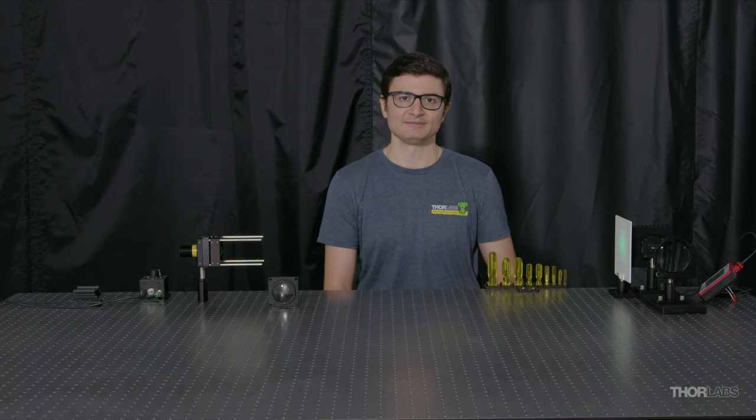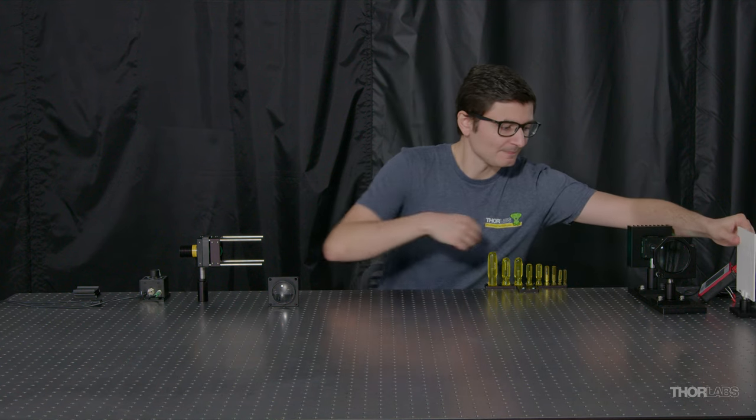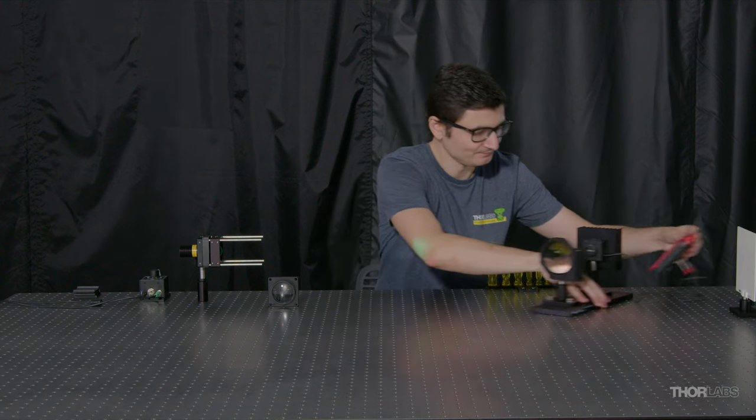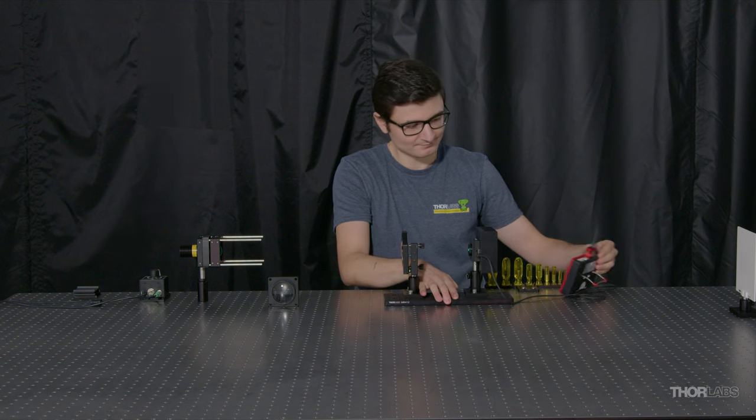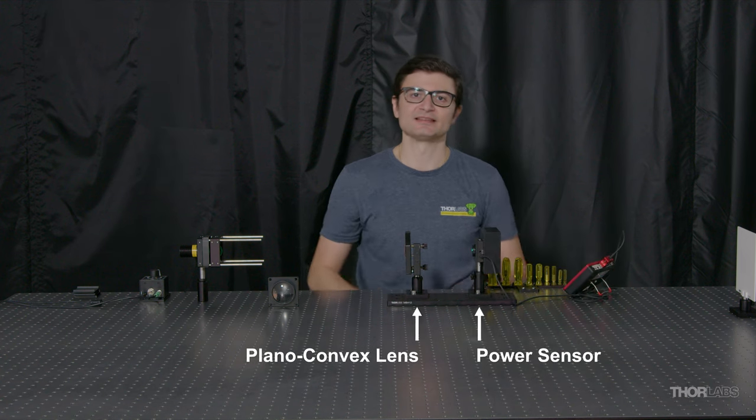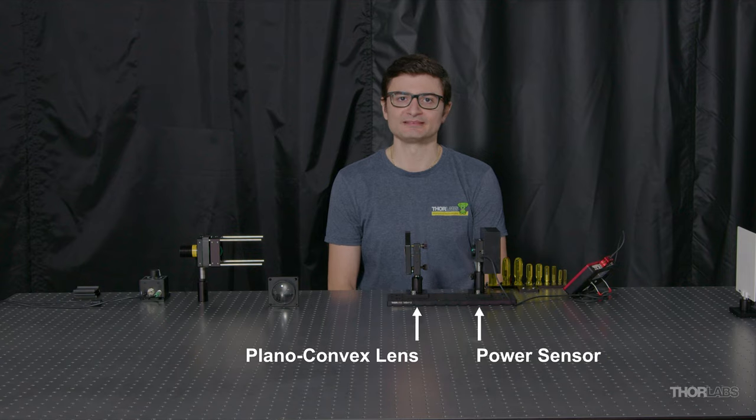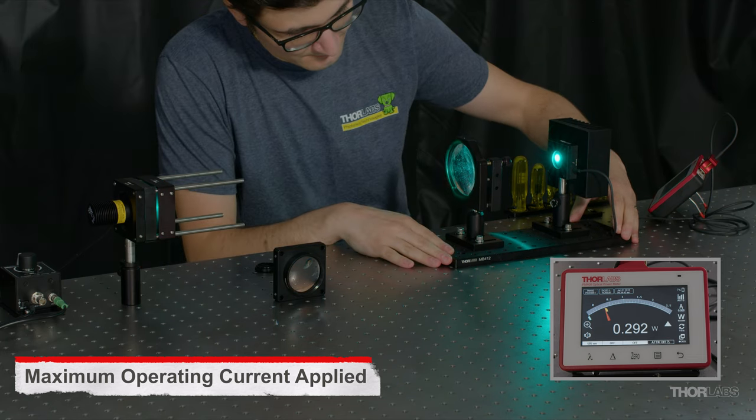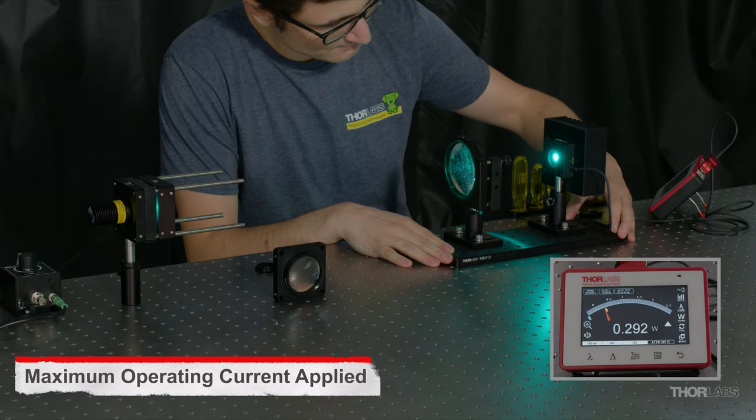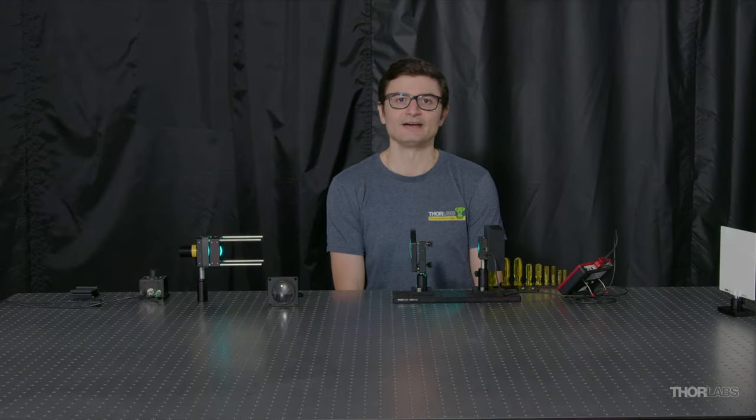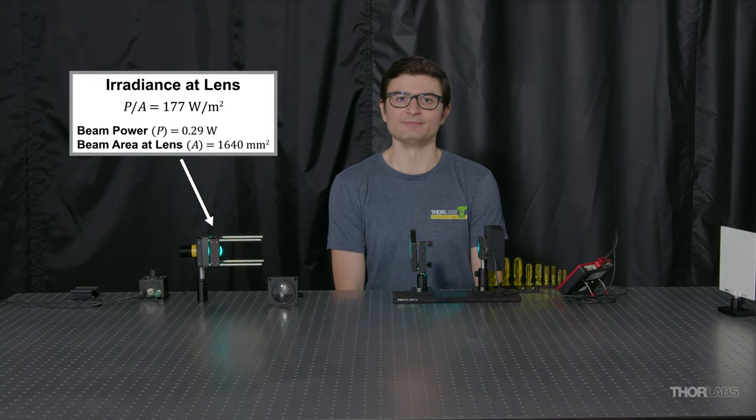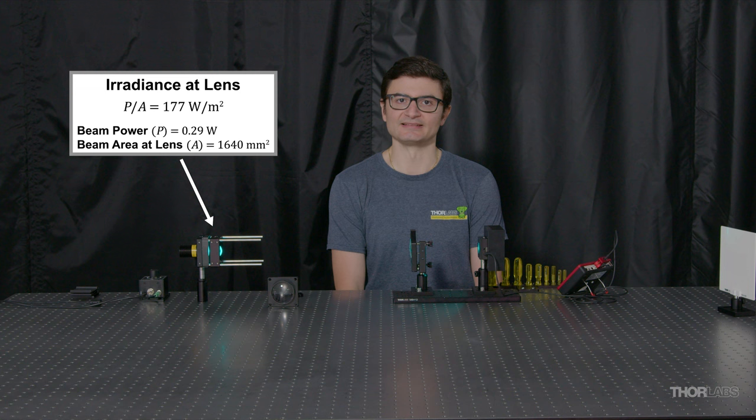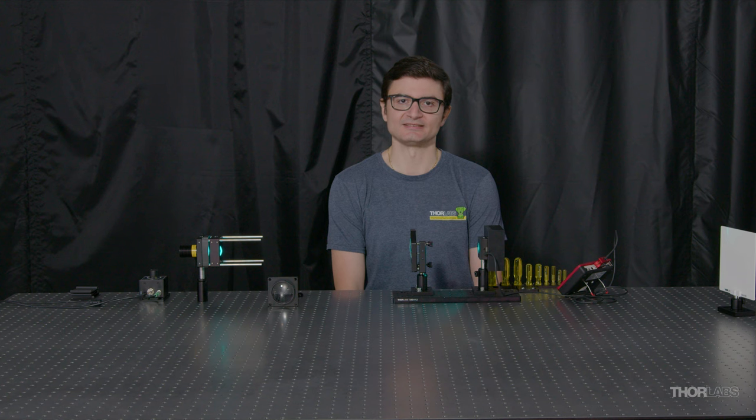Now we'll measure the beam's power. I'll use this large plano-convex lens to focus the beam into the sensor. Having recorded the size and power of the beam allows me to calculate the irradiance. The relatively large divergence angle means the irradiance will decrease as the light travels away from the lens and the beam's area increases.